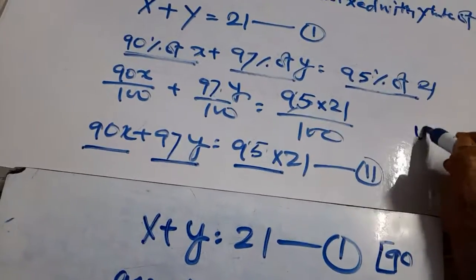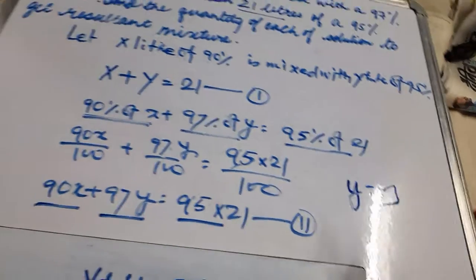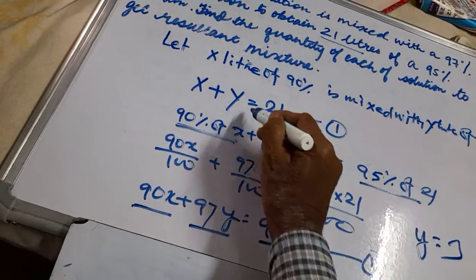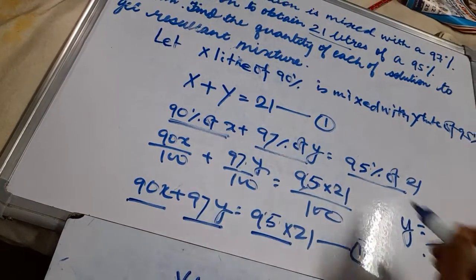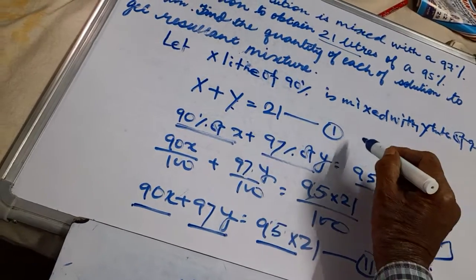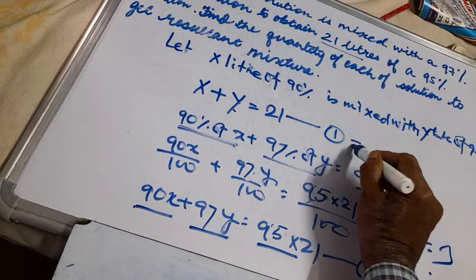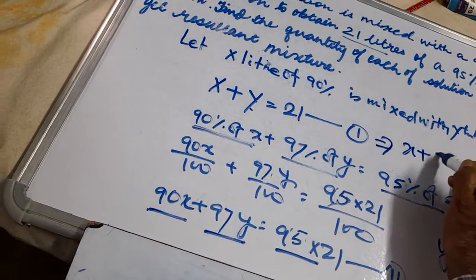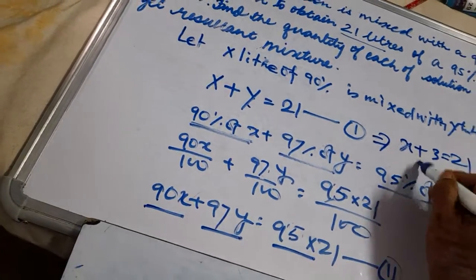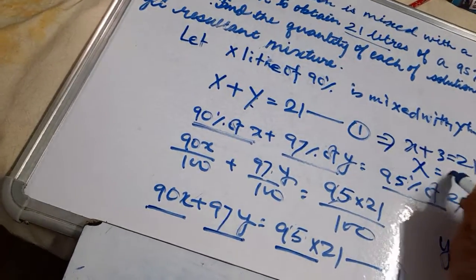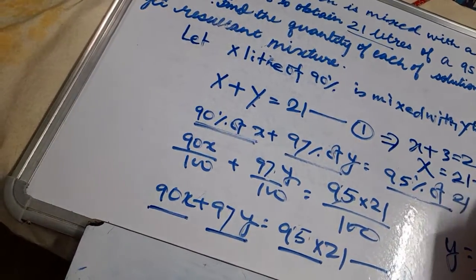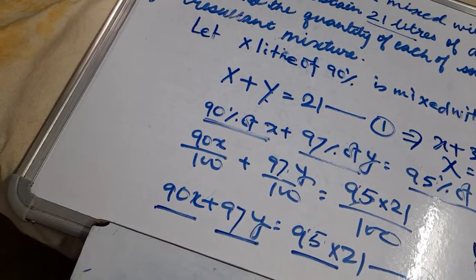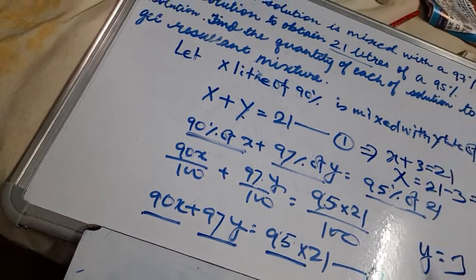So y equals 21 times 5 divided by 7, which gives y equals 15. Putting the value of y into equation 1: x plus 15 equals 21, so x equals 21 minus 15, which is 6.